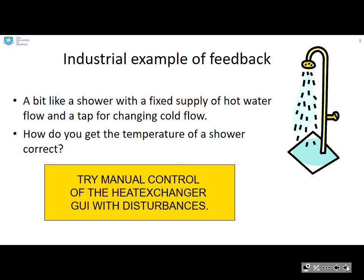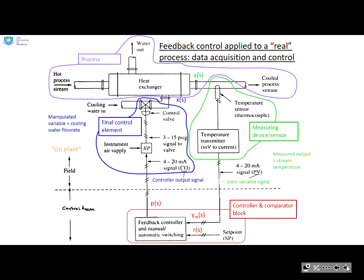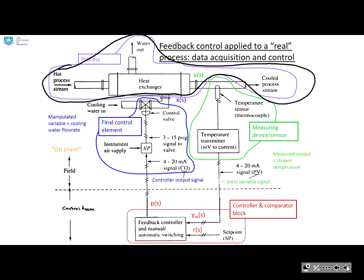So we need to look at how industry deals with the fact that we can't use humans. The industrial example we're going to use is a bit like a shower — mixing hot and cold water to get something at the right temperature — and it's called a heat exchanger. The basic process has a hot stream coming in and a cold flow which cools the hot stream down. By changing the cold flow, we extract different amounts of heat from the hot stream and hopefully get the outlet temperature correct.